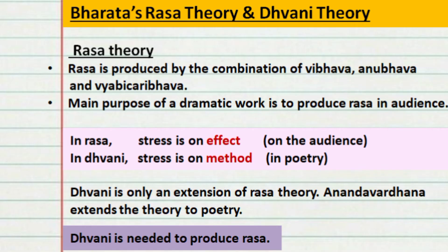Rasa is something we expect to see in the audience, whereas Dhvani is something that is to be seen in the poetry — the suggested meaning should be in the poetry. Only if there is Dhvani in the poetry will it be able to create an effect in the reader. Also, Rasa was limited to a dramatic work, whereas Anandavardhana expands it, extending it to poetry too. In short, Rasa is the effect created in the audience, whereas Dhvani is the method of creating that effect. So Dhvani is needed to produce Rasa.